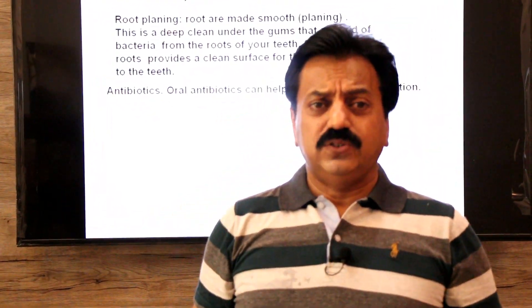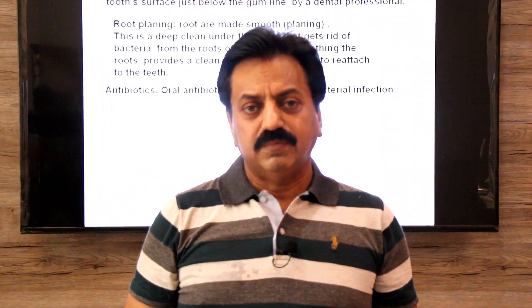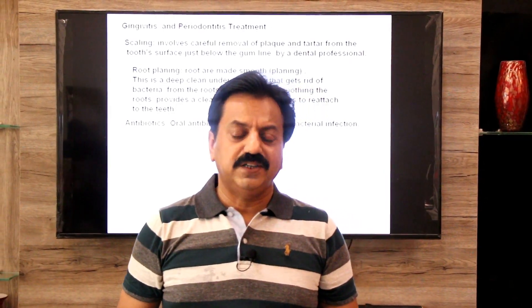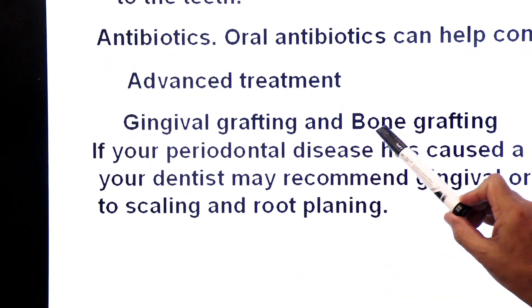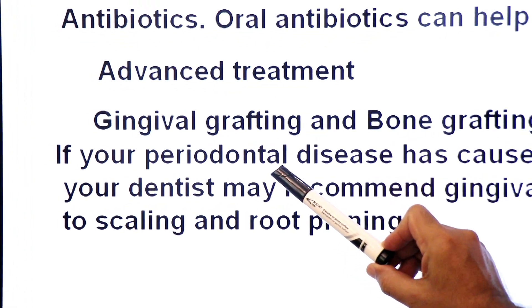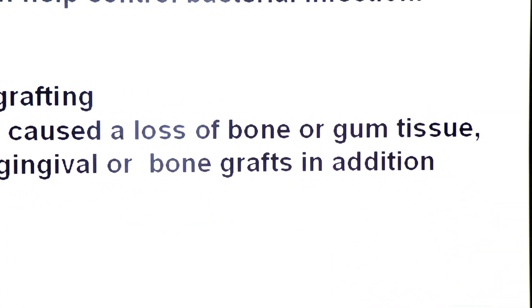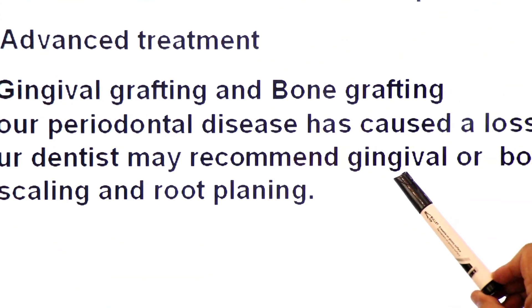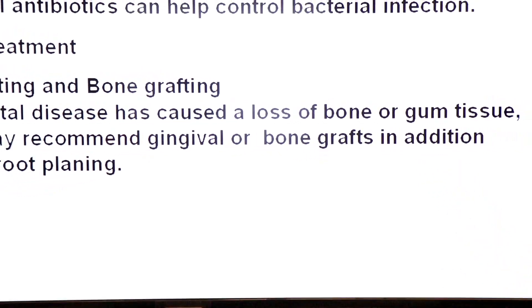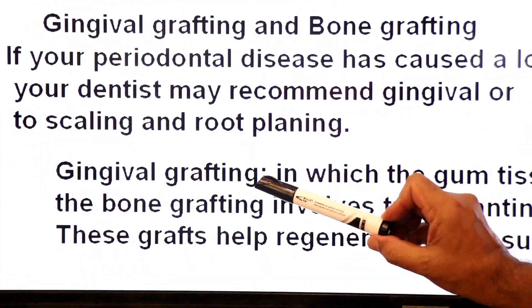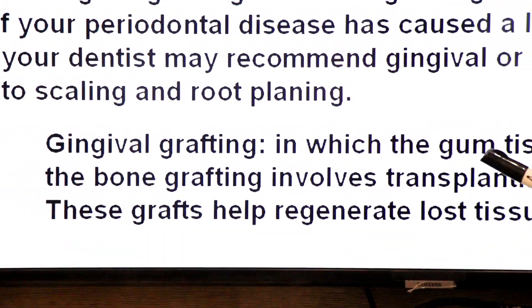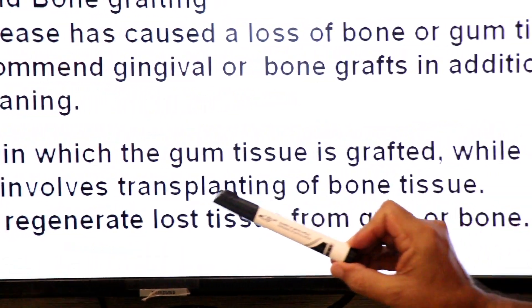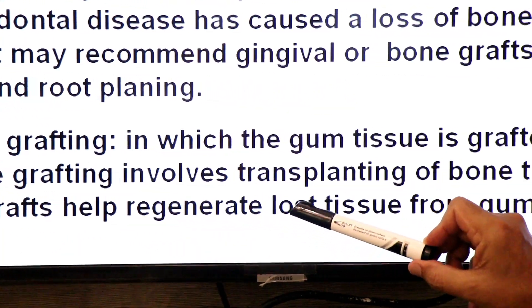If the disease is more advanced, gum tissue grafts or bone grafts may be needed. Advanced treatments include gingival grafting and bone grafting. If periodontal disease has caused loss of bone and gum tissue, your dentist may recommend gingival or bone grafts in addition to scaling and root planning. Gingival grafting involves grafting of gum tissue, while bone grafting involves transplanting bone tissue. These grafts help to regenerate lost tissues from the gum or bone.